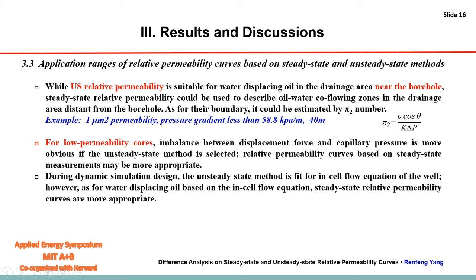In conclusion: under conditions of the same core, the same fluid, and the same fundamental experimental conditions, unsteady-state relative permeability is significantly different from steady-state relative permeability. The irreducible water saturation remains unchanged, but the residual oil saturation, water-phase relative permeability, and oil and water phase indices are quite different.